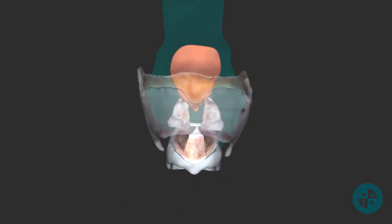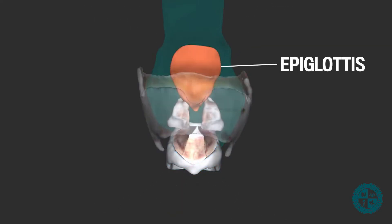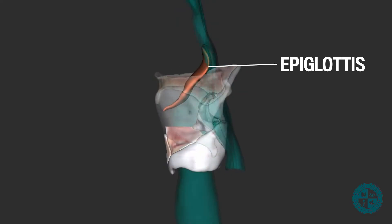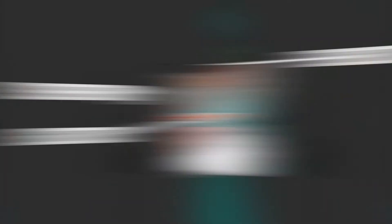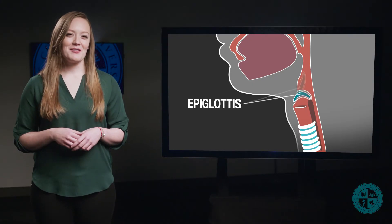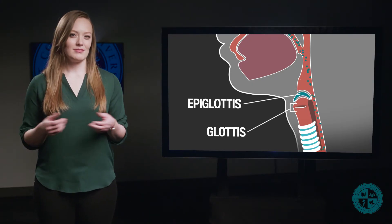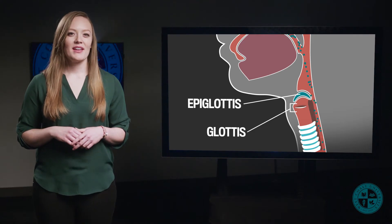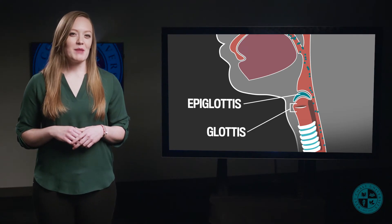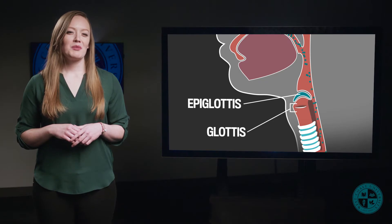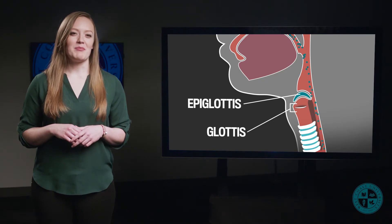Another important structure to mention in the larynx is the epiglottis. The epiglottis is a cartilaginous structure that projects superior to the glottis. When we swallow food or fluids, the epiglottis covers the glottis and prevents food and/or fluid from getting into our airway. So every time you are choking because something went down the wrong pipe, you could probably blame your epiglottis.